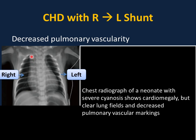On this chest radiograph of a neonate with severe cyanosis, there is cardiomegaly, but importantly the lung fields are clear with diminished pulmonary vascularity bilaterally. This is indicative of right-to-left shunt and right-sided obstruction. The differential diagnosis includes tricuspid atresia, severe tetralogy of Fallot, critical pulmonary stenosis, and pulmonary atresia.